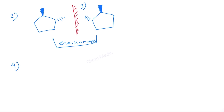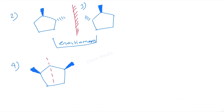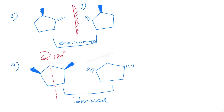Likewise, we can write 1,3-dimethyl cyclopentane with both methyl groups up — that would once again become a meso compound. Whether both methyl groups are up or both are down, they are one and the same; they are identical. This is a meso compound once again because we have a plane of symmetry. If you rotate 180 degrees you get the other one, but that doesn't mean it is a different isomer — these two are identical, meso and achiral.